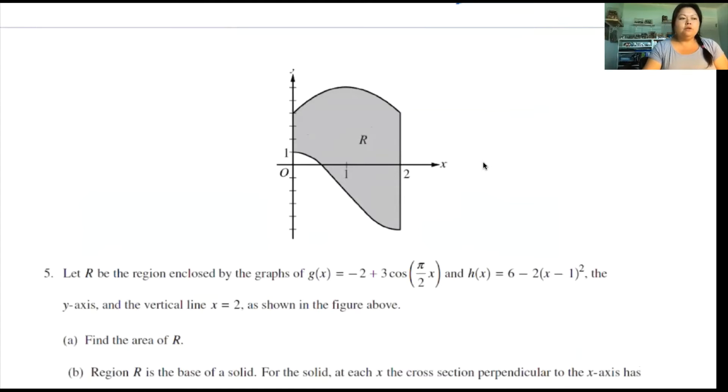We are on 2019 FRQ number 5 here, and this is an area problem. It says that R is the region enclosed by the graphs of g(x) equals negative 2 plus 3 cosine of pi over 2x and h(x) equals 6 minus 2 times x minus 1 squared. The y-axis and the vertical line x equals 2 as shown in the figure above.